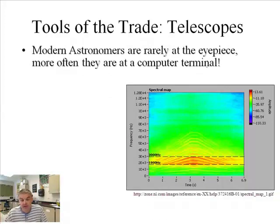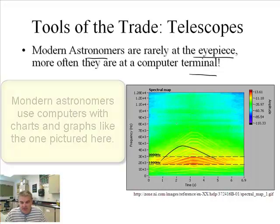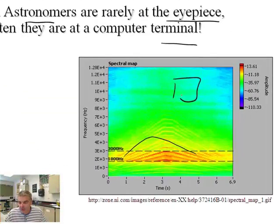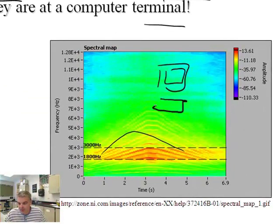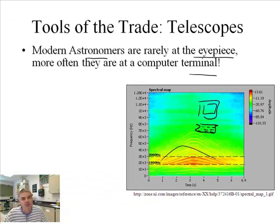Modern astronomers rarely use an eyepiece. More often they use a computer terminal, because what they're more interested in is the numbers — graphs and data. Most of the time they're sitting in front of a computer getting data that way. As opposed to looking at some distant star through an eyepiece the old-fashioned way, we now look at graphs and charts and things like that.